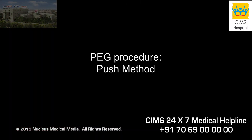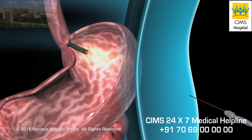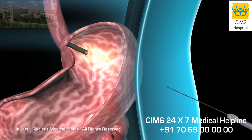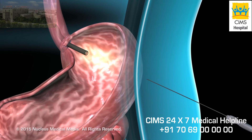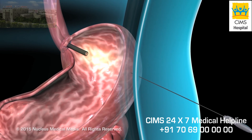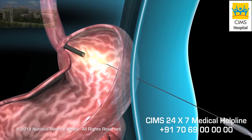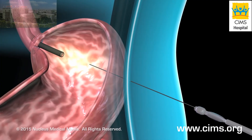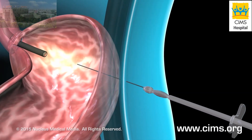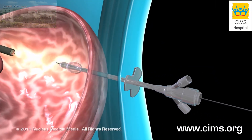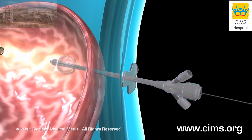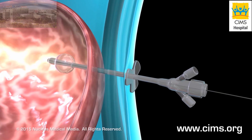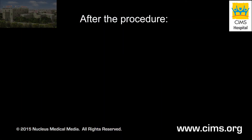In the alternative push method, your doctor will begin in the same fashion by using an endoscope to guide a wire through your abdominal wall and into your stomach. But instead of pulling the PEG tube through your mouth, he or she will push it directly into your stomach over the wire.